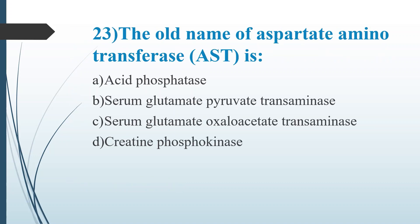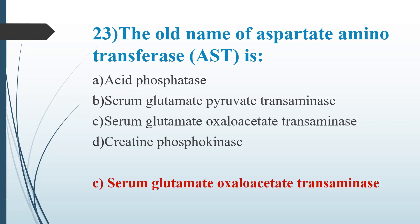Twenty-third question: The old name of aspartate aminotransferase. Option A, acid phosphatase. Option B, serum glutamate pyruvate transaminase. Option C, serum glutamate oxaloacetate transaminase. Option D, creatinine phosphokinase. Answer is Option C, serum glutamate oxaloacetate transaminase. The old name of ALT is serum glutamate pyruvate transaminase.